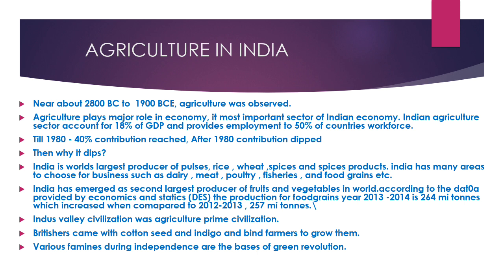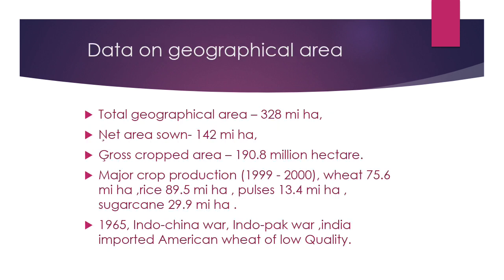The total geographical area is 328 million hectares. The arable land used is 148 million hectares, which is the net area. The gross crop area is 198.8 million hectares.